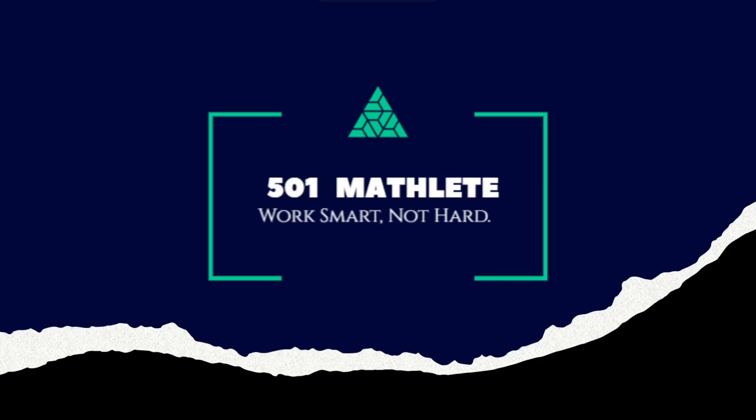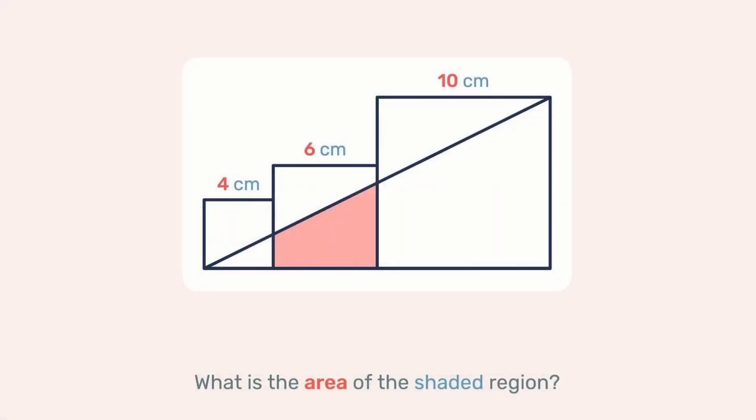Welcome to 501 Matly where we work smart, not hard. In today's video, we're given this diagram of three squares side by side with side lengths of 4 centimeters, 6 centimeters, and 10 centimeters. Just with that information, we're to determine the area of the shaded region.